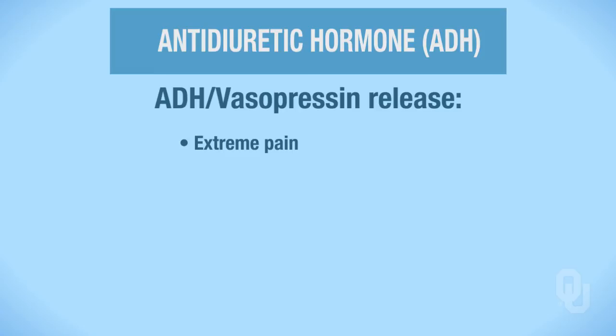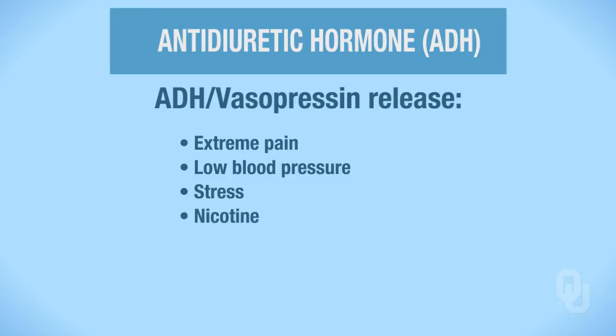Now let's look at what stimulates antidiuretic hormone, or vasopressin, release. Extreme pain, low blood pressure, and stress are at least three items that can stimulate ADH release, as well as nicotine if you're a smoker, or morphine. Patients on morphine or a morphine equivalent like Dilaudid all stimulate ADH release.